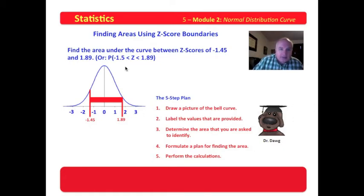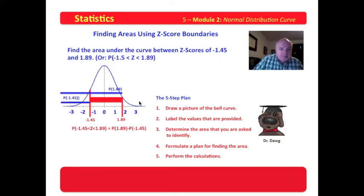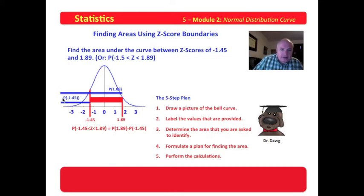We're in luck in this problem because everything starts out as a Z-score. If it started out as raw data, we would have had to convert it to Z-scores, and then we could have gone to work. Here's the plan: the tables give us the area for 1.89, everything back to the left of 1.89. The tables likewise give us all of the area to the left of negative 1.45. So if we look at our picture, what the tables provide are this area and this area, and we can see that subtracting this area minus that area will give us the area that we're looking for.